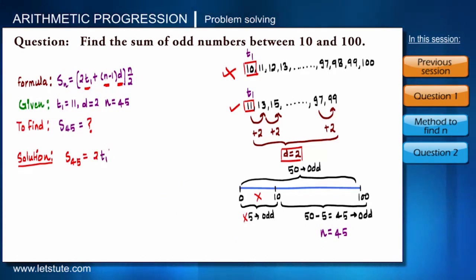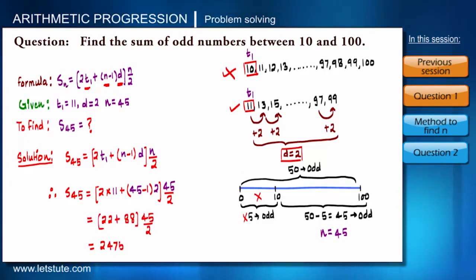So now we have got all the parameters. Substitute these parameters in the formula: S45 equals 2 into 11 plus N minus 1, that is 45 minus 1 into 2, whole multiplied by 45, and it will give us 2475. That means sum of odd numbers from 10 to 100 is 2475.